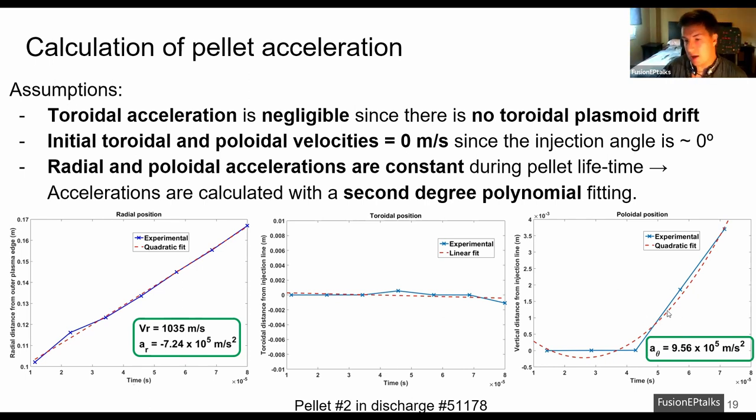Here we have the typical upward acceleration of the pellet, but with the radial acceleration, sometimes positive and negative accelerations were observed. And this is believed to be caused by an error in the analysis, since there are no significant changes in the discharges that could explain this completely opposite behavior. So the study of the dependencies will only be done with the vertical acceleration.